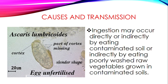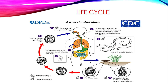Transmission can be direct or indirect. Ingestion may occur directly by eating contaminated soil, or indirectly by eating poorly washed raw vegetables grown in contaminated soil. This soil may be contaminated with human feces which harbors the ova. Poorly washed vegetables grown in soil contaminated with Ascariasis ova or eggs are also a source of infection.